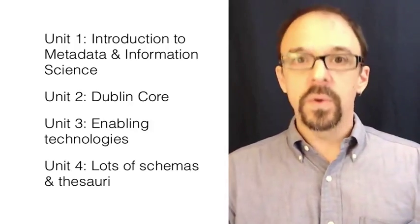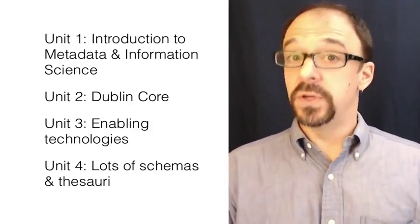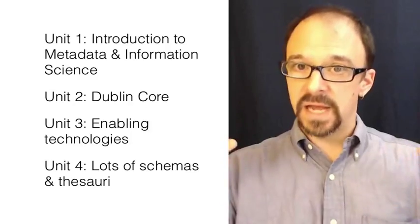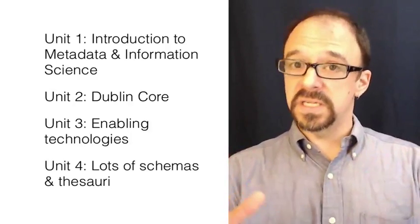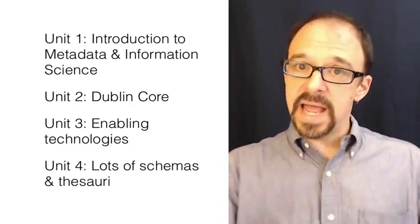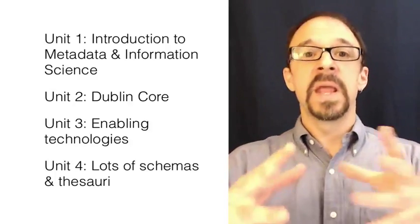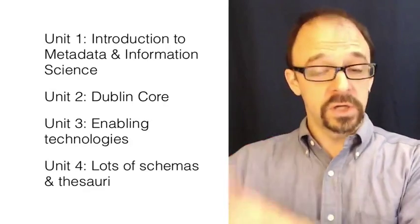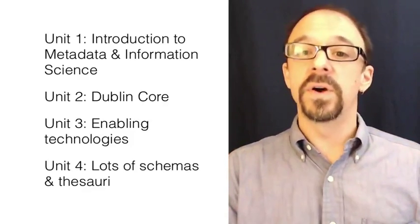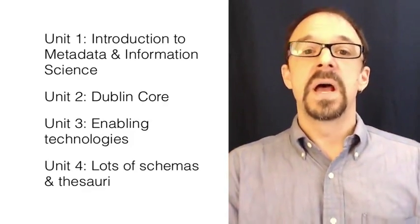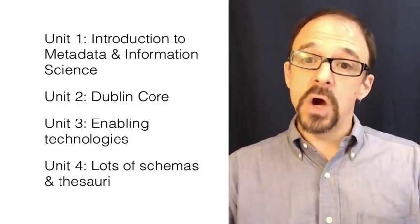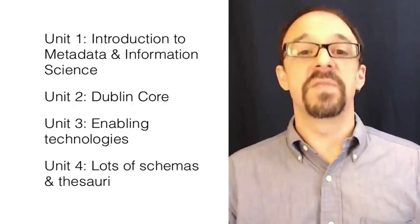Unit four was our alphabet soup unit. We looked at lots of metadata schemas and thesauri. We drew a distinction between metadata schemas, which lay out a set of elements, and thesauri or controlled vocabularies, which provide values for those elements — or encoding schemes, which lay out ways to encode and create values.